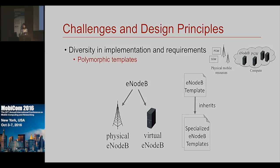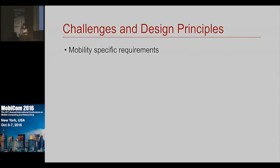The service provider does not have to worry about how things are implemented in the underlying infrastructure. Instead, they can specify the requirement for a generic eNodeB, and the orchestrator will handle the instantiation of the right kind of specialization based on the service policies or SLAs of the service instance.